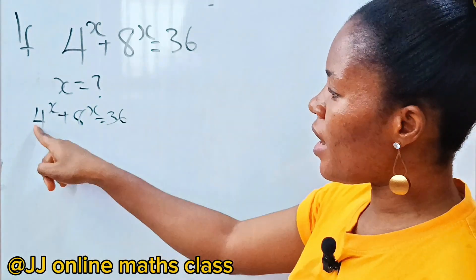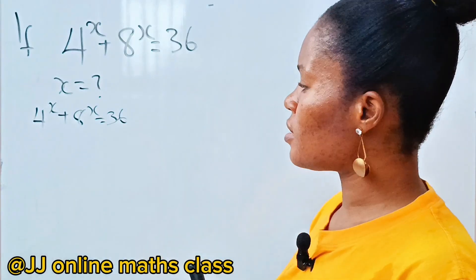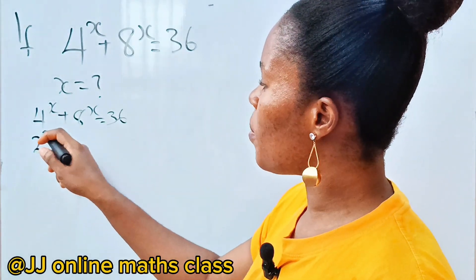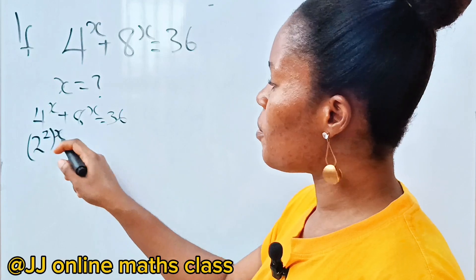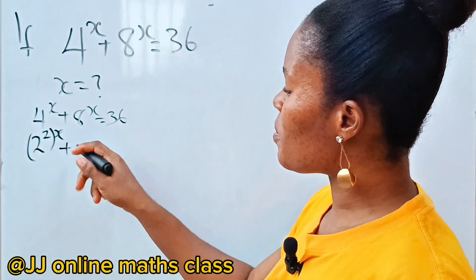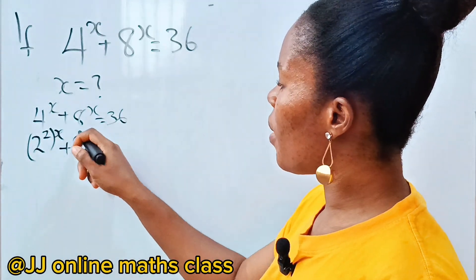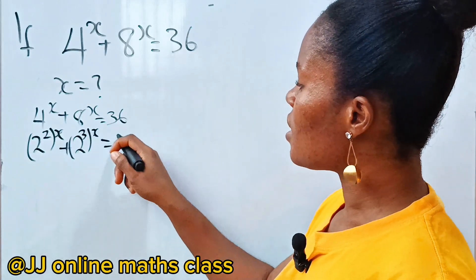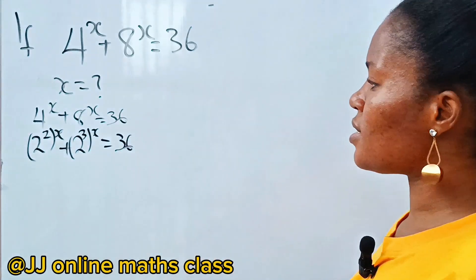We can express this in base 2. So 4 is 2 squared, giving us (2²)^x, and 8 is 2 cubed, giving us (2³)^x, so the equation becomes (2²)^x + (2³)^x = 36.